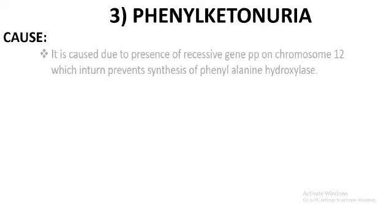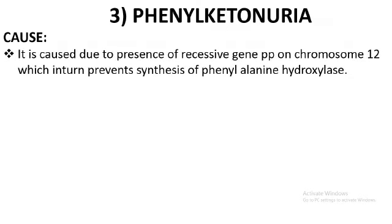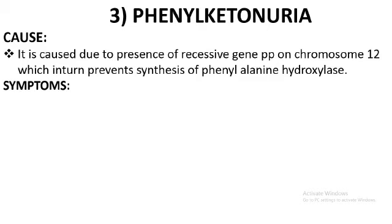Phenylketonuria is mainly caused by the recessive gene, represented as small 'p', located on chromosome 12. This prevents the synthesis of phenylalanine hydroxylase, the enzyme required to convert phenylalanine to tyrosine and facilitate further reactions. Since this recessive gene is on chromosome 12 — an autosome — the enzyme phenylalanine hydroxylase is not synthesized.